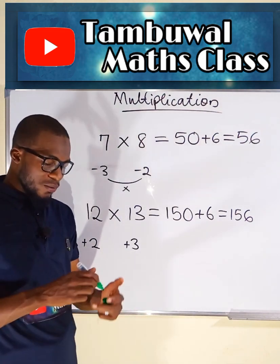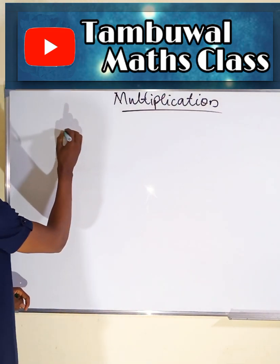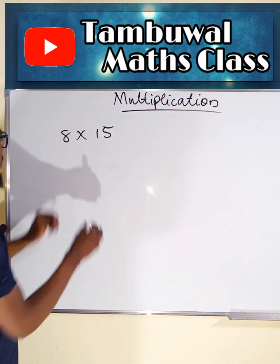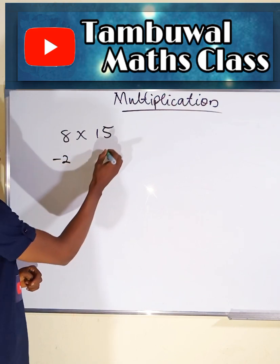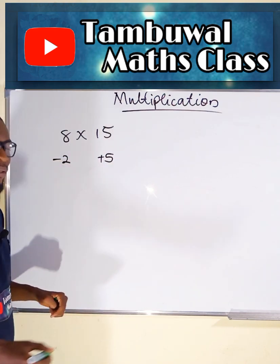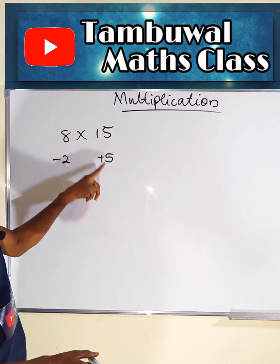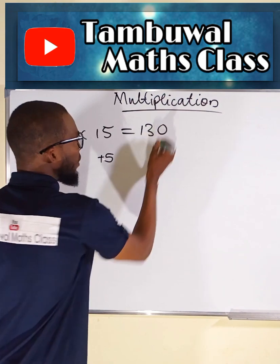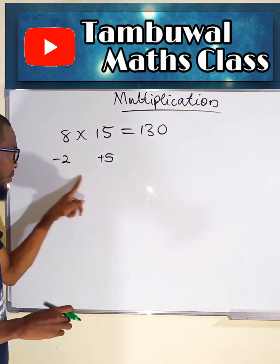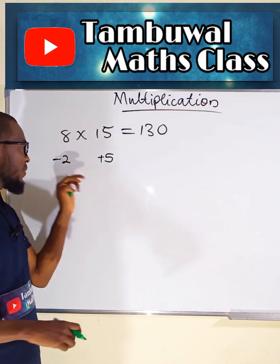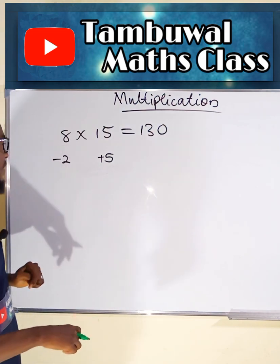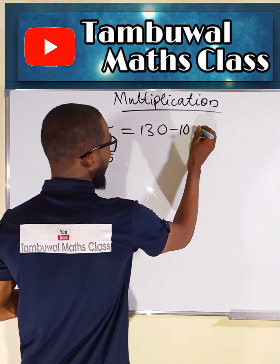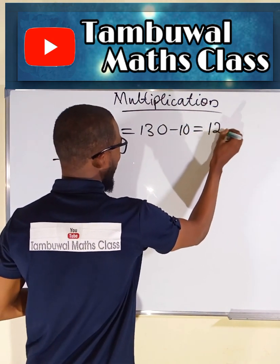Let us try other numbers. Suppose we want to multiply 8 by maybe 15. 8 is 2 less than 10, while 15 is 5 greater than 10. This plus this, or this plus this, will give us 13. But add 0 at the end. Multiply these two numbers together — this is negative while this is positive — 2 times 5 is 10. So we have minus 10, meaning we are subtracting 10 instead of adding. And this is equal to 120.